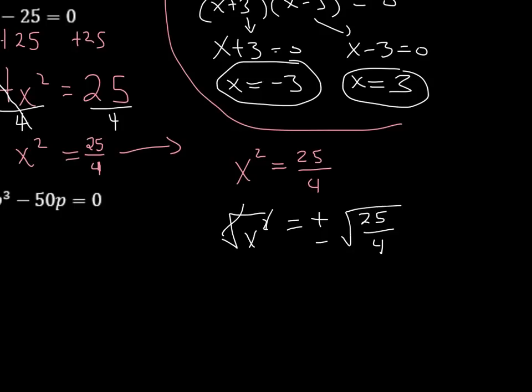These cancel out, and we get x is equal to plus or minus... Now just try to put this in your calculator and you're going to see that we get a terminating decimal. If we just use kind of some logic on top, what's the square root of 25? You can do that in the calculator. It's going to give you 5. And then what's the square root of 4? The square root of 4 is 2.